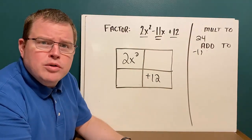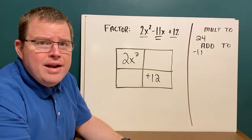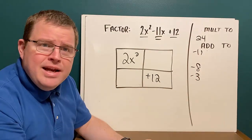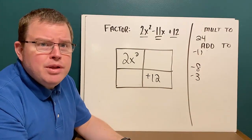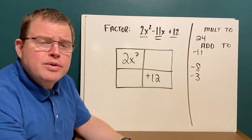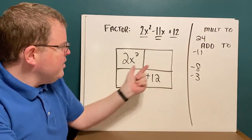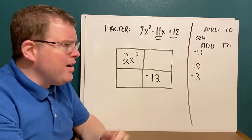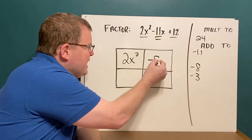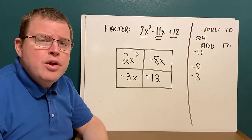Can you come up with two numbers that multiply to 24 and add to negative 11? How about negative 8 and negative 3? Negative 8 times negative 3 equals 24, and negative 8 plus negative 3 equals negative 11. Those are my two numbers, and I use those to fill in the boxes with the variable x. I'm going to put minus 8x here and minus 3x here — but I could have done it the other way and there would be no problem.